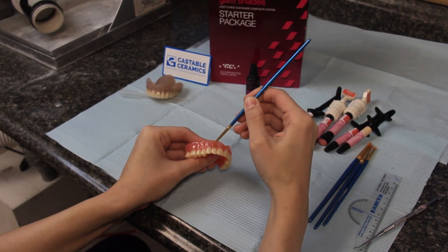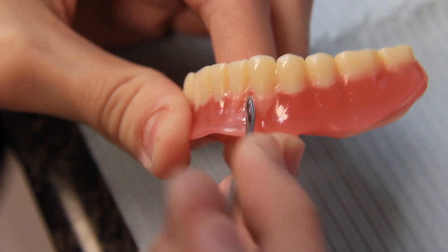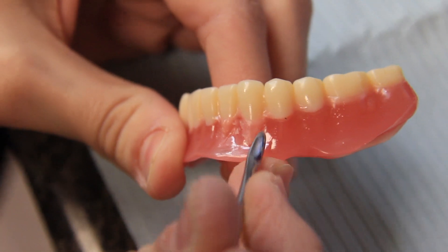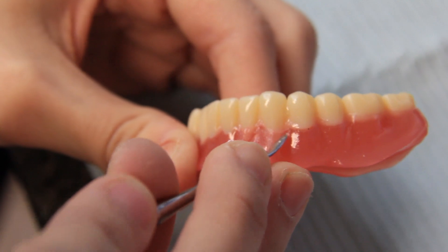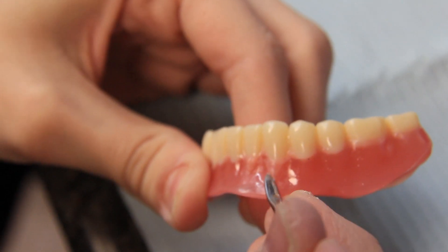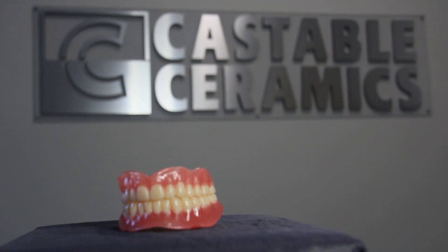A technician uses composites and stains to emulate natural features. This process is called characterization. Characterization is optional, but it goes a long way towards making the dentures look and feel more lifelike and natural. Thanks to modern technology, dentures can really be something to smile about.